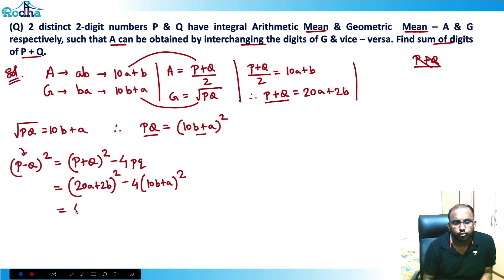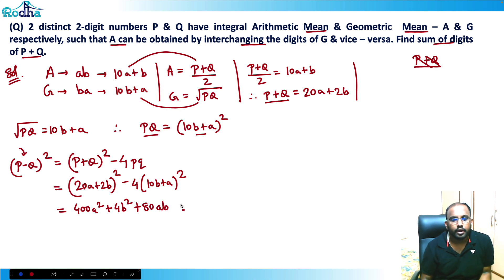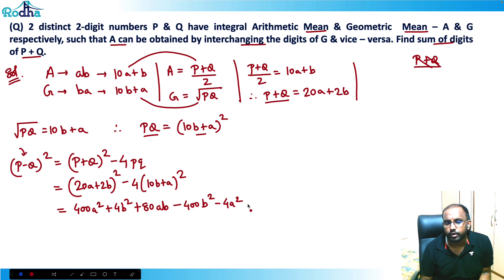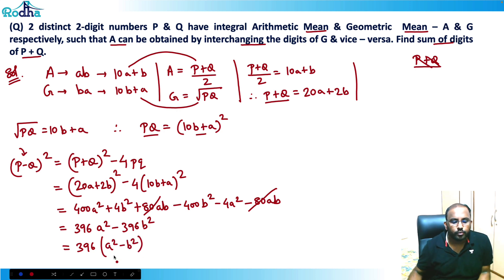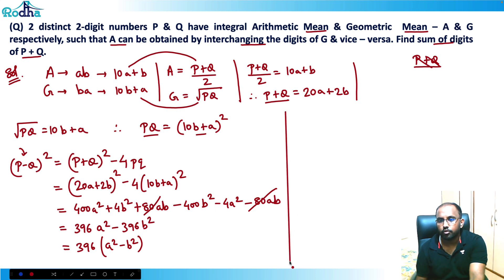Expanding (20a plus 2b) squared gives 400a² plus 4b² plus 80ab. Then 4pq equals 4 times (10b plus a) squared, which gives 400b² plus 4a² plus 80ab. Substituting into the identity, the 80ab terms cancel. What remains is (p minus q) squared equals 400a² plus 4b² minus 400b² minus 4a², which simplifies to 396a² minus 396b², or 396(a² minus b²).